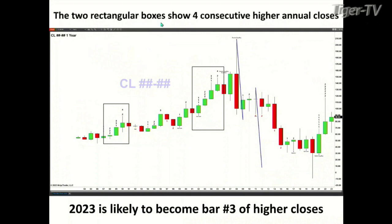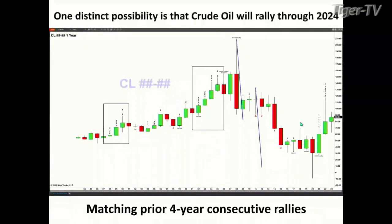Going back further on the annual chart for light sweet crude, these two black rectangle areas show consecutive yearly closes higher — where the close of one year is above the prior year's close. Going back to 1984, we've had two four-bar rallies where each year closed above the prior year. In 2023, we're already trading above last year's close, and we're likely to form bar number three of consecutive moves higher, suggesting a rally in light sweet crude that takes us into 2024.